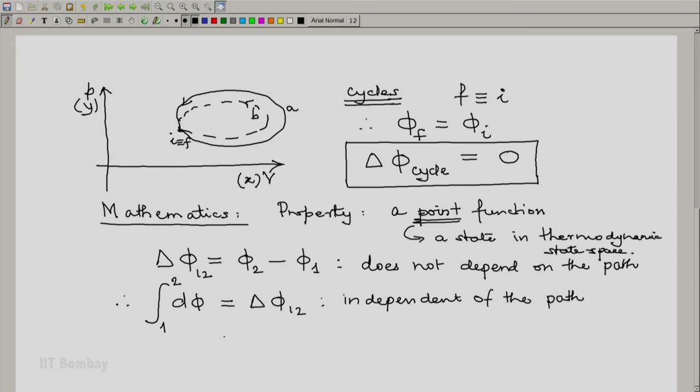And hence, in mathematical terms, we say d phi is an exact differential. The mathematical property of any exact differential is that when you integrate it from a given point to another point, the value of the integral does not depend on the path.